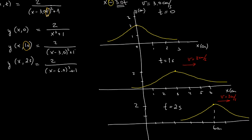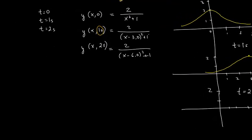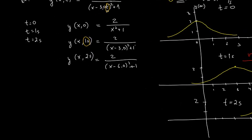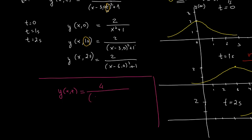For further practice, I suggest investigating a situation where you have the function y(x, t) = 4 / ((x + 3t)² + 1). Try to do the same analysis for time equals zero, one second, and two seconds, and see how it is similar to and different from the previous example.